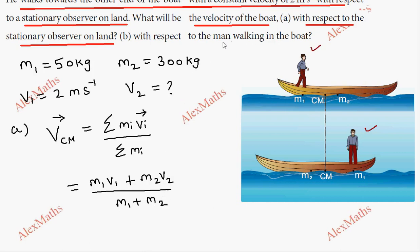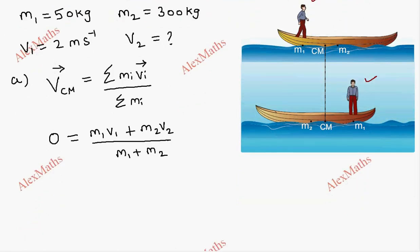First assumption: with respect to the stationary observer on land, for this whole system there is no external force acting — only internal forces. Therefore, the velocity of the center of mass is zero. This gives us m1*v1 + m2*v2 = 0.